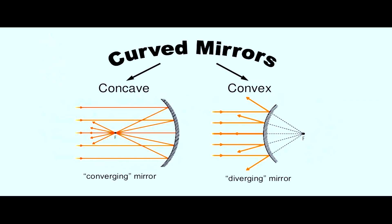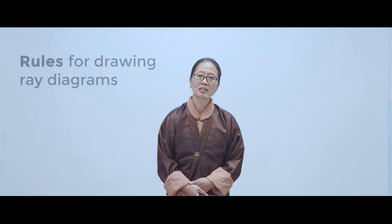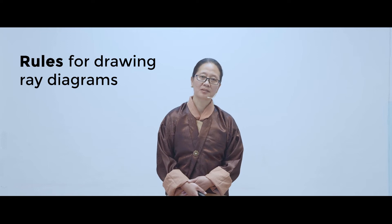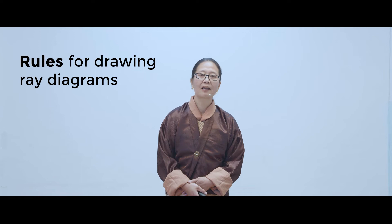The point from where the reflected rays appear to diverge is called the principal focus or simply the focus of the convex mirror. Since a concave mirror converges a set of parallel rays after reflection at a point, it is also called a converging mirror. Similarly, a convex mirror is also called a diverging mirror because it appears to diverge the rays from a point.